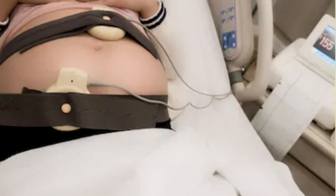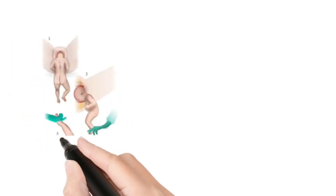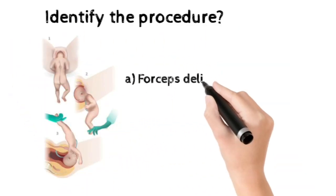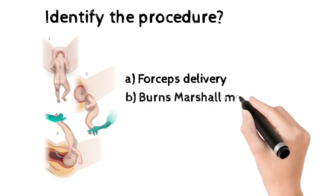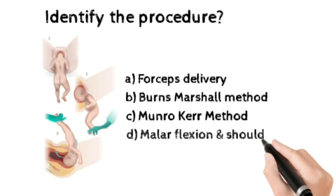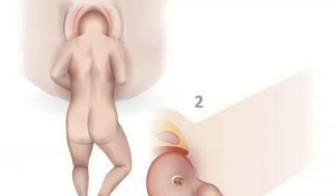Number two: identify the procedure. Option A: Forceps delivery, Option B: Burns Marshall method, Option C: Mauriceau method, Option D: Mallard flexion and shoulder traction. The correct answer is Option B, Burns Marshall method. Burns Marshall method is a method of breech delivery, that is delivery of the aftercoming head in breech presentation.